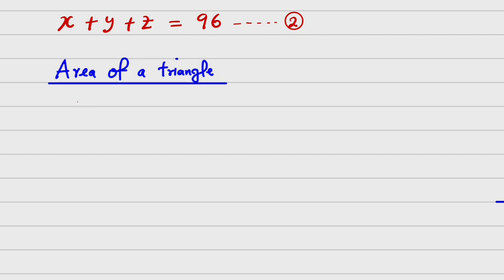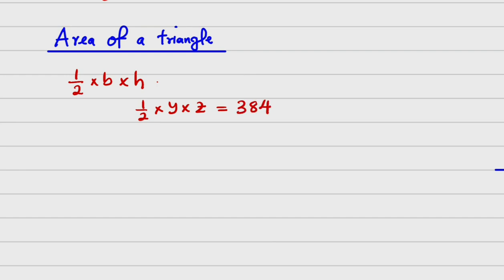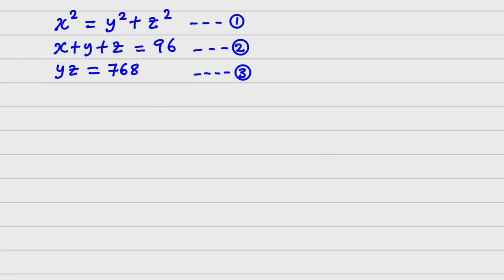The third equation comes from the area. The area of a triangle is one-half times base times height. We do not use the hypotenuse for this. So the area is one-half times y times z, which equals 384. Therefore yz equals 768. This is Equation 3.